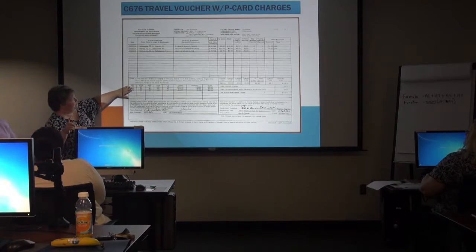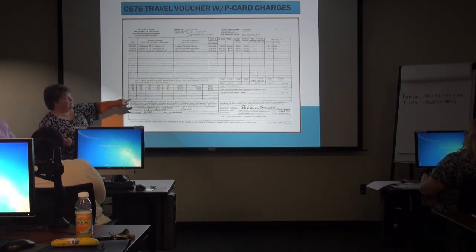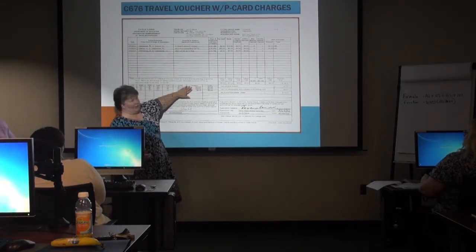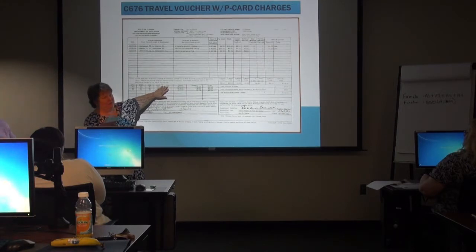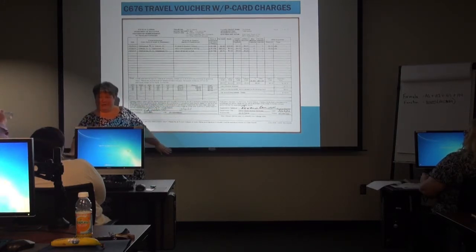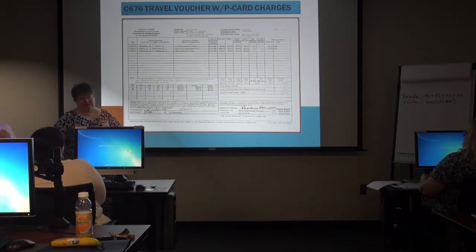One thing to point out is that the travel program does it really well for mileage and meals — it separates those out automatically. There's one for per diem as well, so you don't have to worry about breaking that out; if you put it in the per diem column, it pulls that object code for you. But when you're on the P-card screen, pay attention to the choices of object codes and try to choose the correct one to the best of your ability.